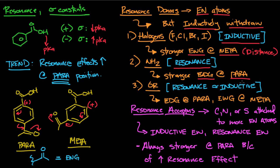For NH₂ at the para position, resonance has a greater effect and the inductive effect is less significant due to distance. The third and trickiest case is oxygen attached to an alkyl group or hydrogen — OR groups. The resonance donation and inductive withdrawal are pretty close in strength. OR groups are electron-donating at the para position because resonance donation is more significant there, but at the meta position an OR group becomes electron-withdrawing because the inductive effect is stronger at closer distances.